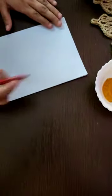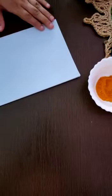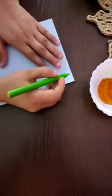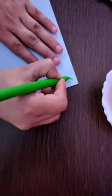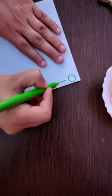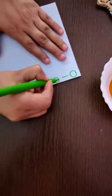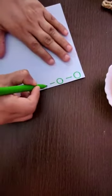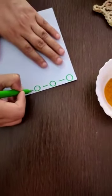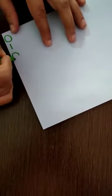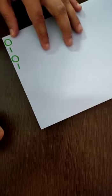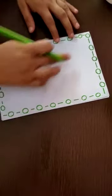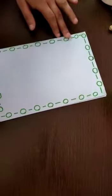And then first of all we will make a border, a very simple border. We will take a sketch pen. With the help of sketch pen make a circle, standing line, circle, standing line, circle, standing line. And this side you can make circle, sleeping line, circle, sleeping line like this. So now our border is ready.